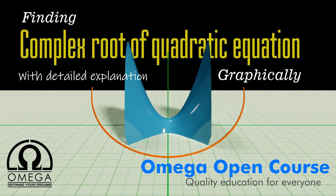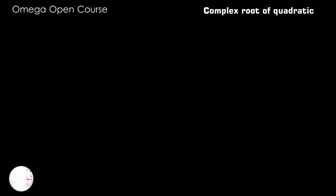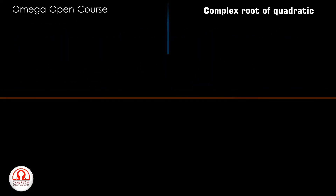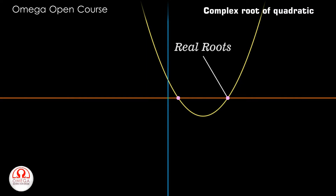Welcome to Omega Open course. While solving quadratic equations, you have been taught how to find the real roots of a quadratic equation from the graph. All you do is draw the graph of the given quadratic expression and find the points where the graph intersects the x-axis. If it intersects the x-axis at two points, the quadratic equation has two distinct roots.